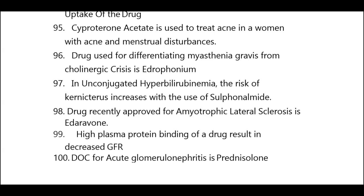High plasma protein binding of a drug results in decreased GFR. Drug of choice for acute glomerulonephritis is prednisolone. This completes 100 high-yield points of Rapid Revision Series 2 — Pharmacology.